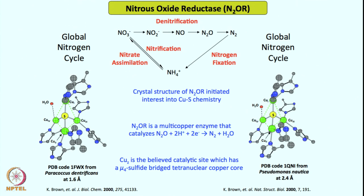The enzymatic studies so far are not very clear in terms of suggesting a clean pathway by which nitrous oxide is getting activated and then converted to nitrogen. The mechanism of action of such copper G side is not clear to date. There are a number of studies, mainly computational works, that suggest a pathway involving nitrous oxide binding between two copper centers.